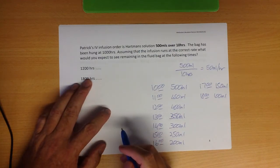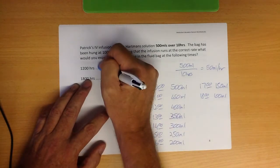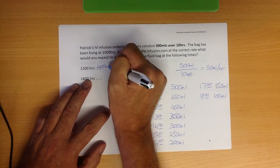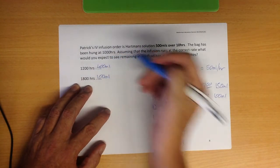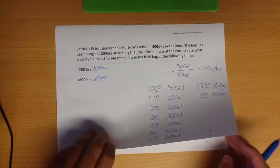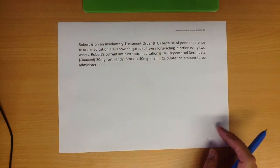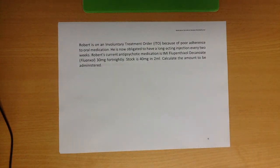So at 1200 we've got 400 mils left, and at 1800 we've got 100 mils left. Don't have to set out your answer like that of course, but I think that makes it abundantly easy and clear if you do need to go back and double check yourself. It should be fairly easy to do.